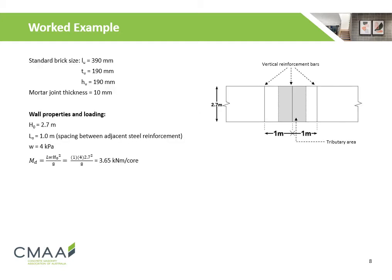The height of the wall is 2.7 m, with a spacing of 1 m between each vertical reinforcement bar. Using a total out-of-plane loading of 4 kPa, the design bending moment is calculated to be 3.65 kNm per core. The diagram on the right shows the tributary area of the design load applicable to each reinforced core.